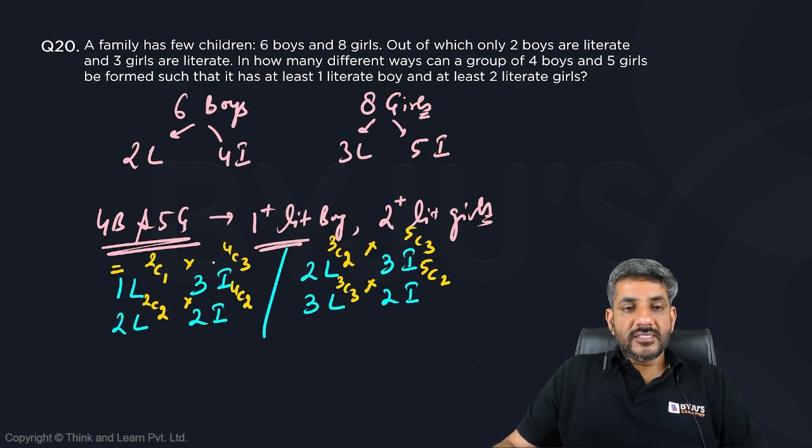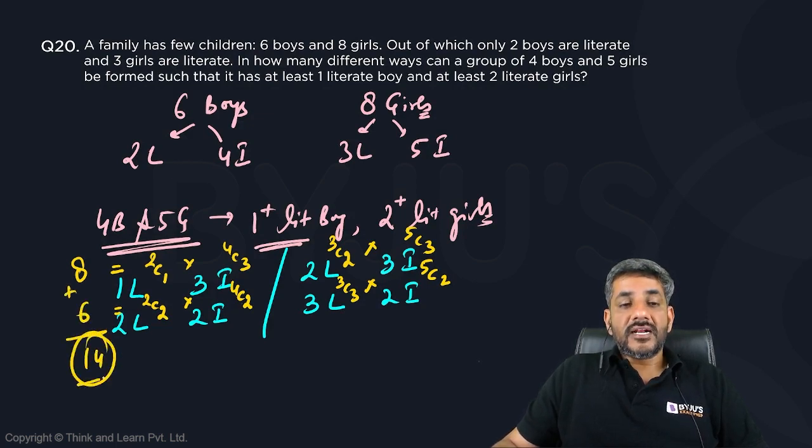What is the number of ways here? 4C3 is 4. 4 into 2 is 8. Here it is 4C2 is 6, 6 into 1 is 6. So I have 14 ways of selecting boys.